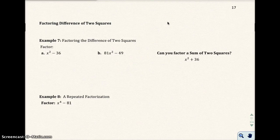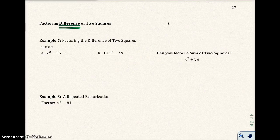So now we've talked about how to factor by pulling out the greatest common factor, how to factor by grouping, how to factor trinomials, and now I want to talk about the last technique: how to factor the difference of two squares. The difference means subtraction.